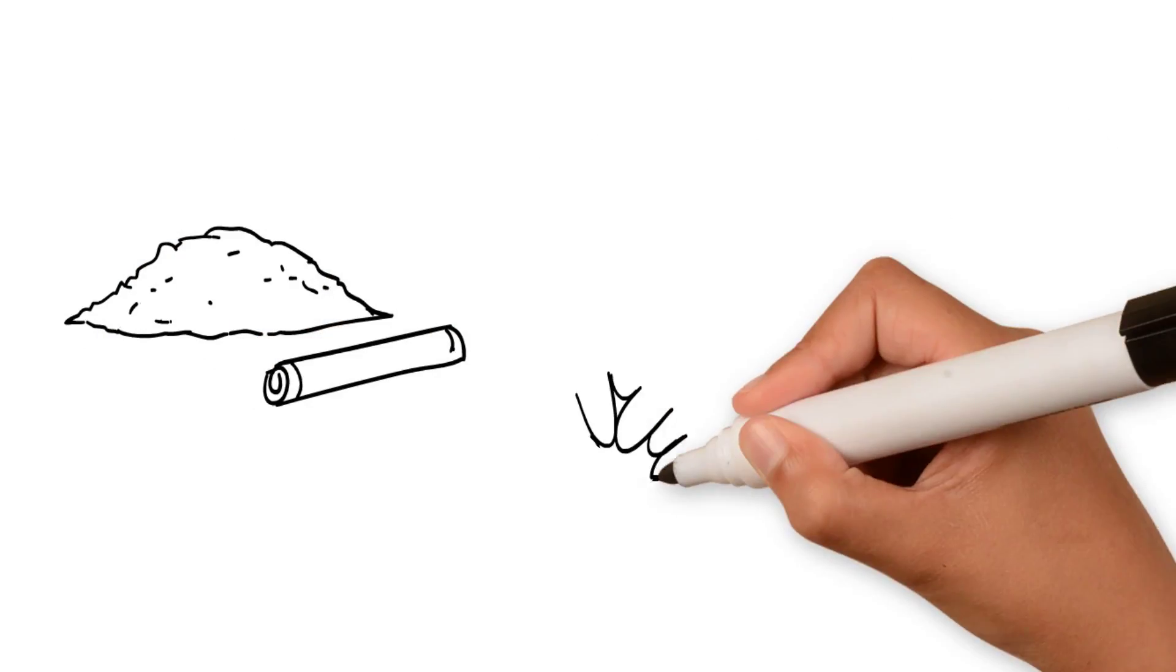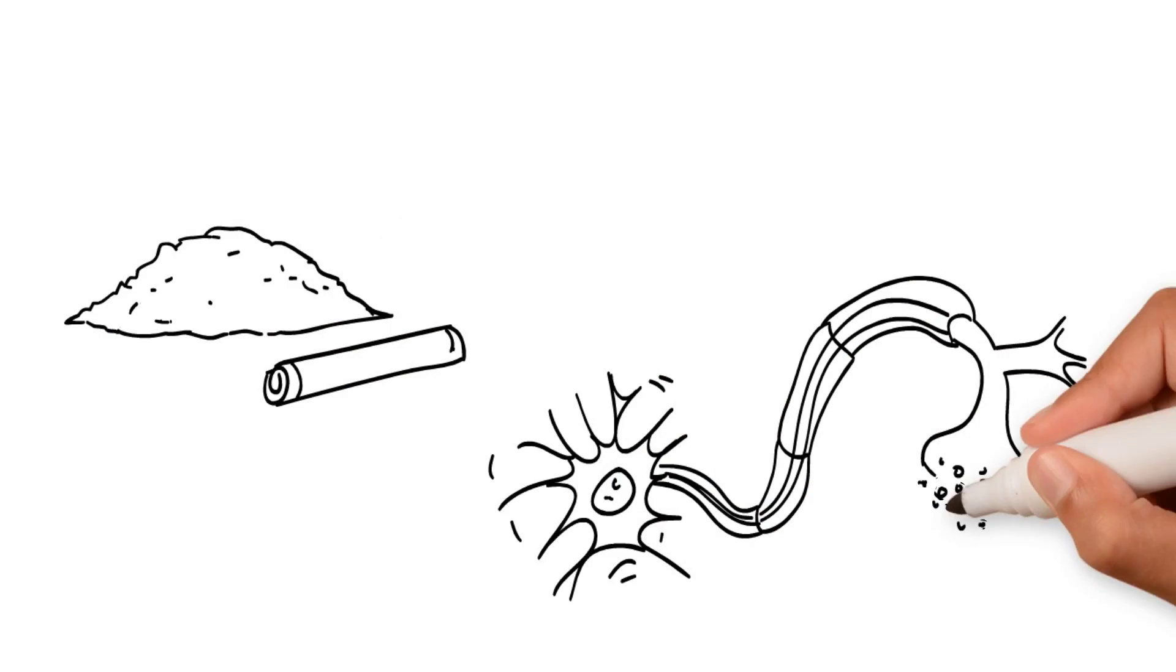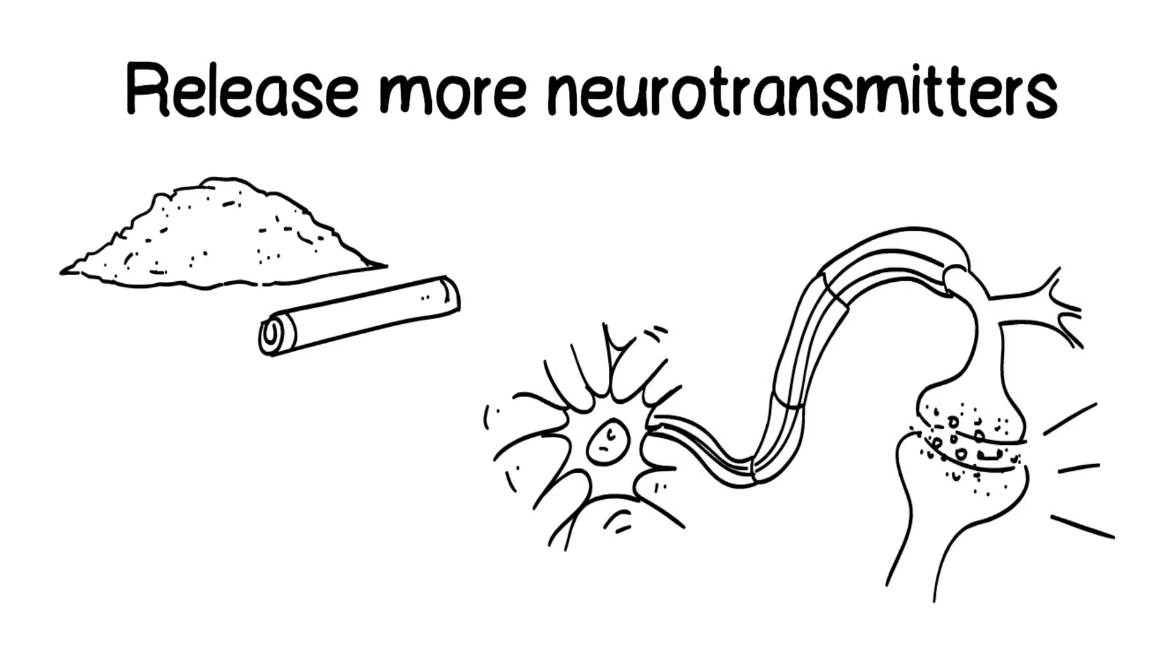Other drugs, like amphetamine or cocaine, excite the brain's neurons and convince it to release more neurotransmitters than it should.